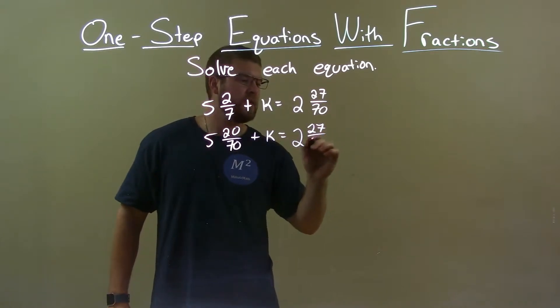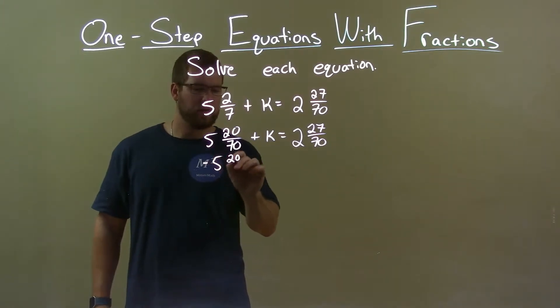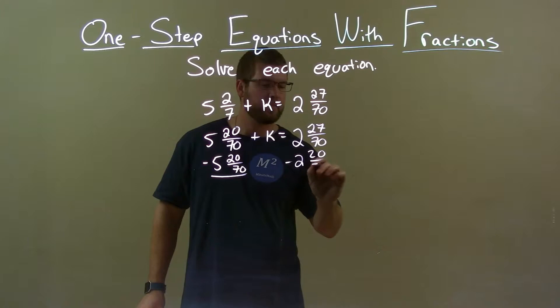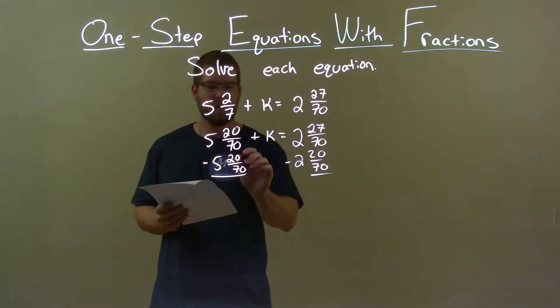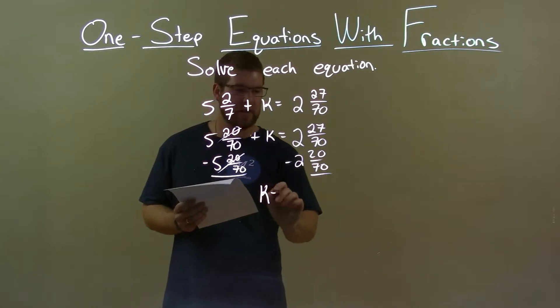This makes it a little easier to see. Now, I'm going to subtract 5 and 20 over 70 from both sides, and in doing so, I'm eliminating the 5 and 20 over 70 on the left, giving me k by itself.